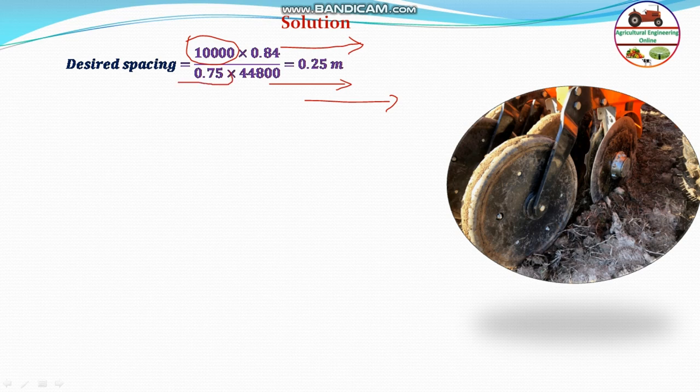44,800 is the number of plants per hectare. The row-to-row spacing is 0.75 meter. If you multiply 0.75 by 44,800 you get the number of seeds requiring that spacing. The row-to-row spacing is already given as 0.75 m, and plant-to-plant spacing must be found using 10,000 divided by (44,800 × 0.84), accounting for germination, since more seeds must be planted because only 84% germinate. Therefore, the plant-to-plant spacing equals 0.25 meter.